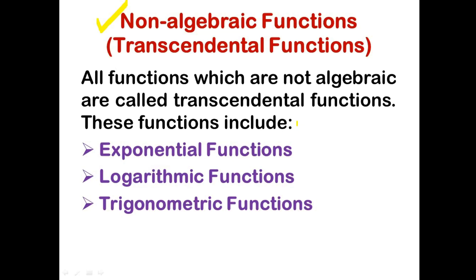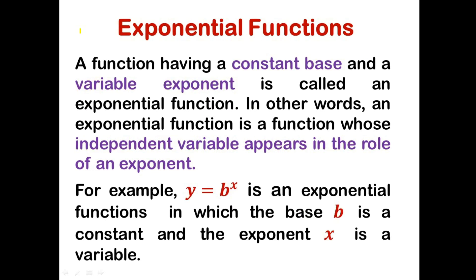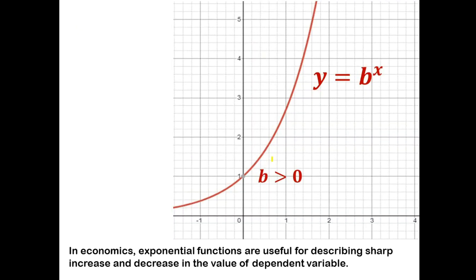All functions which are not algebraic are called transcendental functions. These include exponential functions, logarithmic functions, and trigonometric functions. A function having a constant base and a variable exponent is called an exponential function — one whose independent variable appears in the role of an exponent. For example, y equals b to the power x is an exponential function where the base b is a constant and the exponent x is a variable. On plotting an exponential function on a coordinate plane we get a continuous upward rising curve.